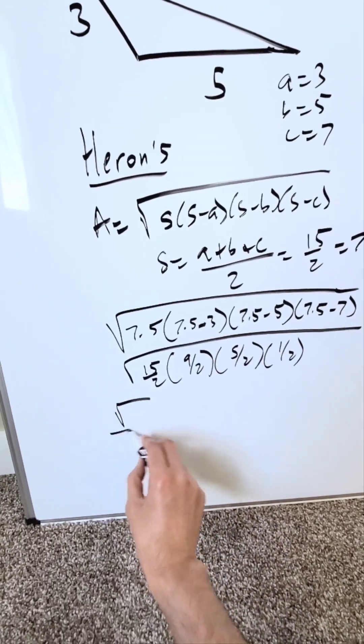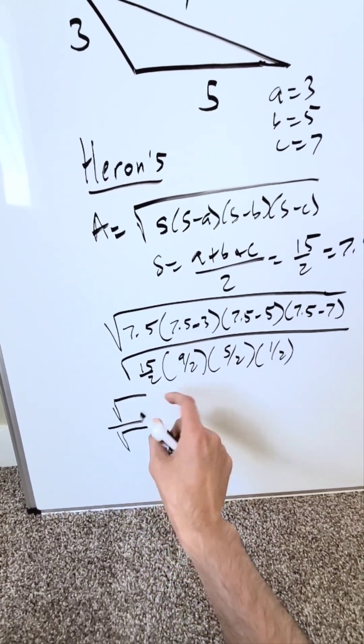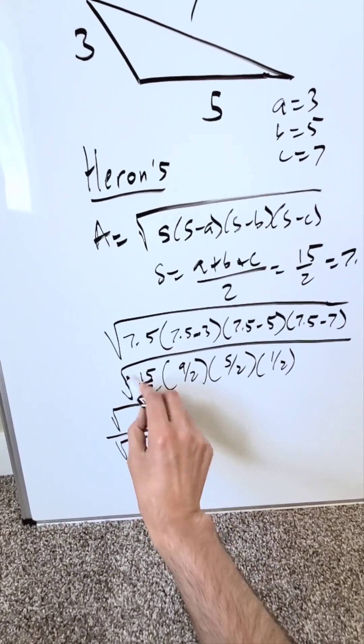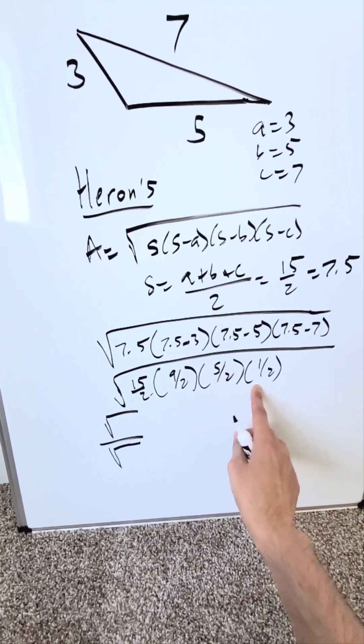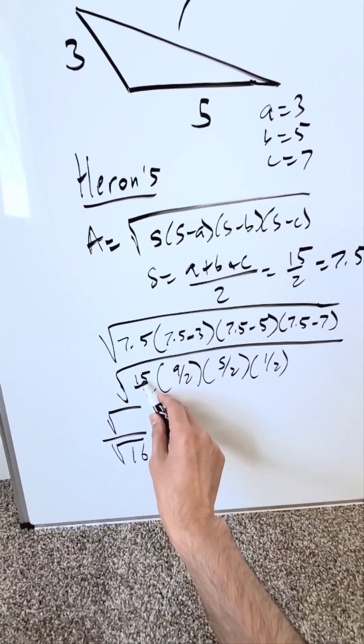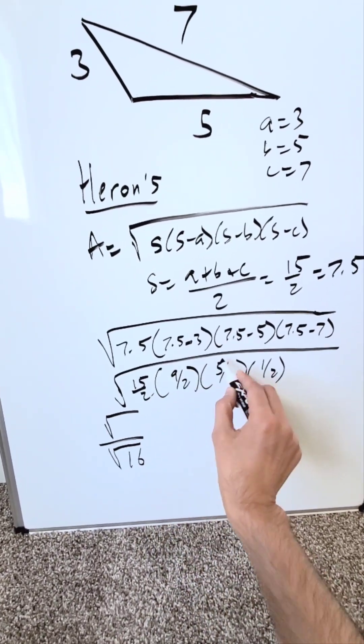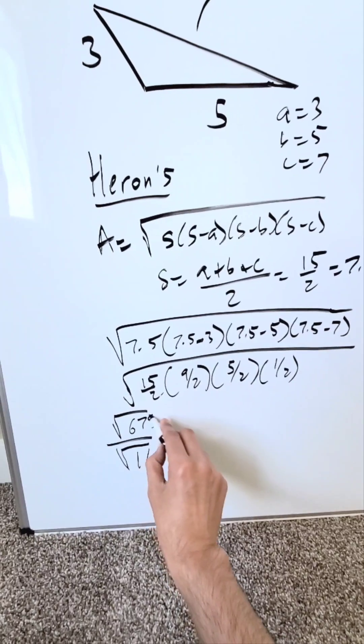Separate everything here into their individual numerator and denominator square roots. You can because everything here is under a square root. Use your properties of radicals. I have 2s in the denominator. 2 times 2 times 2 times 2. That's 16. I have 15 times 9 times 5 in the numerator. That's 675.